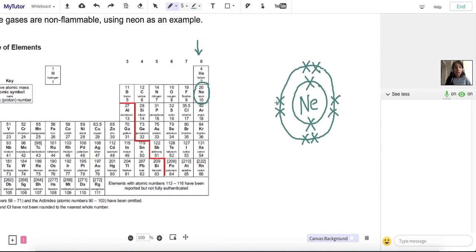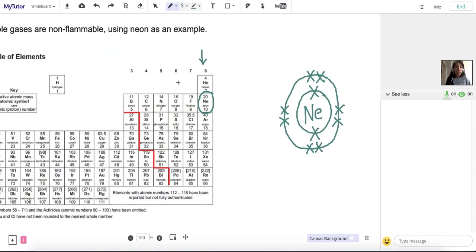Whereas the noble gases already have a full outer shell of electrons. So that means there are no electrons free to be lost, gained, or shared. So that also means that they don't want to react. So the noble gases tend to be inert or non-reactive, and therefore, they don't catch on fire. So that's why the noble gases are non-reactive and therefore non-flammable.